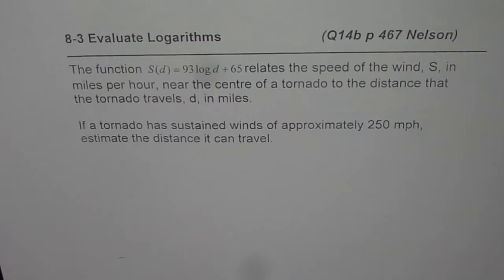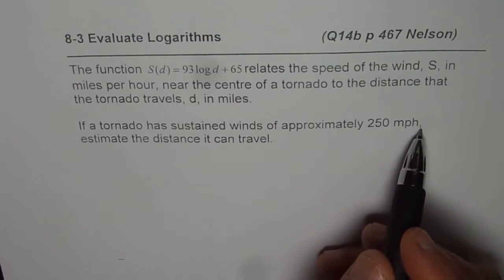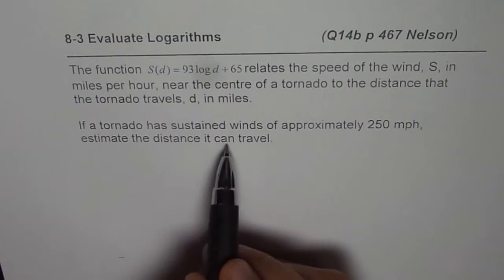If the tornado has sustained speeds or winds of approximately 250 miles per hour, estimate the distance it can travel.